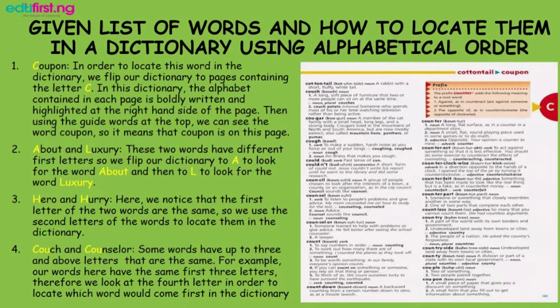Four: 'couch' and 'counselor'. Some words have up to three and above letters that are the same. For example, our words here have the same first three letters; therefore, we look at the fourth letter in order to locate which word would come first in the dictionary.